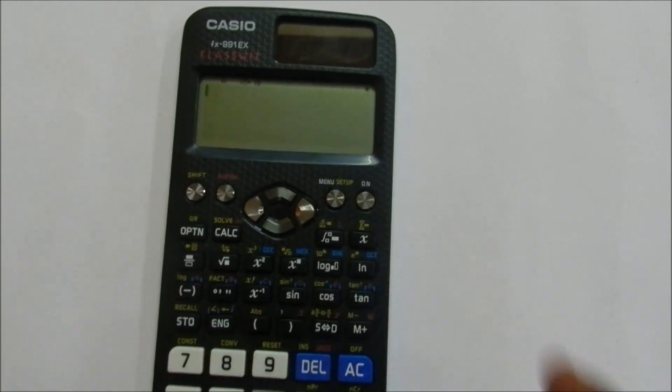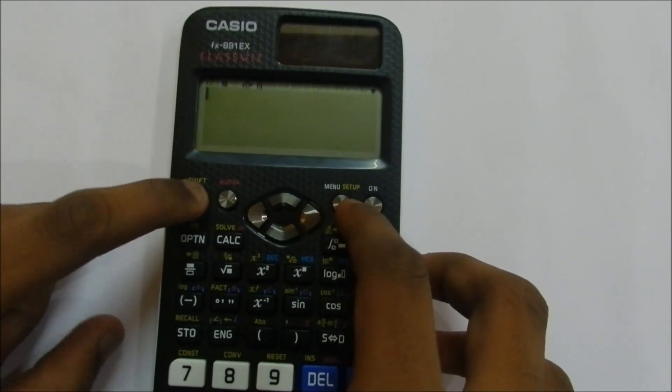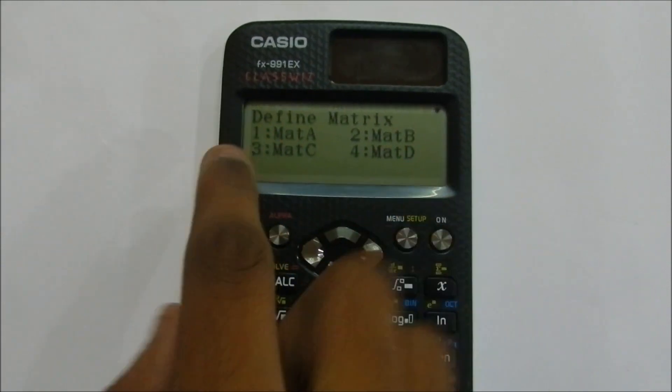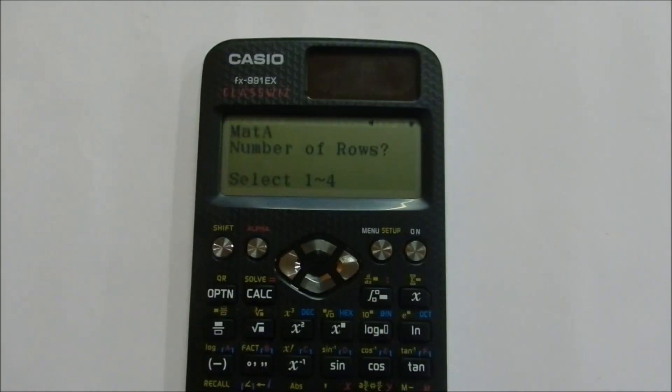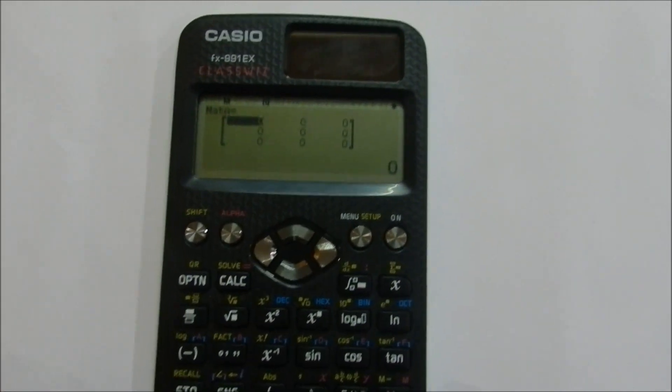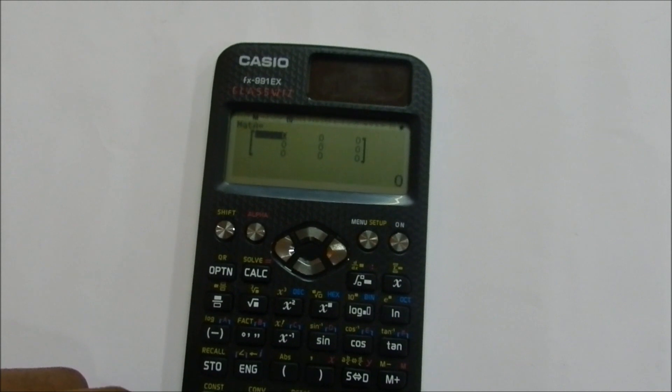First, on the calculator, go to the Matrix mode. Define Matrix A. Let's take a 3x3 matrix. For example, you could take any numbers. I am taking a simple matrix in this case.